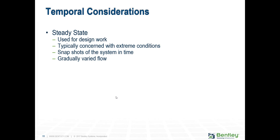In steady state we also look at minimum flows. Why? To make sure we have enough slope to clean those pipes. In many places — South America, Europe — tractive force is used. In the US, a minimum velocity is most common. You want to ensure enough slope to generate sufficient velocity. So we are concerned with both high flows and low flows.